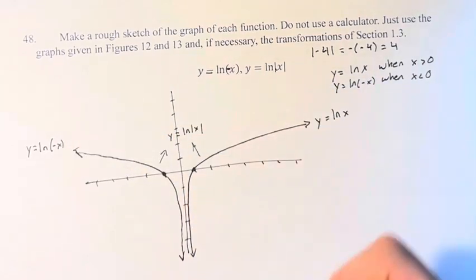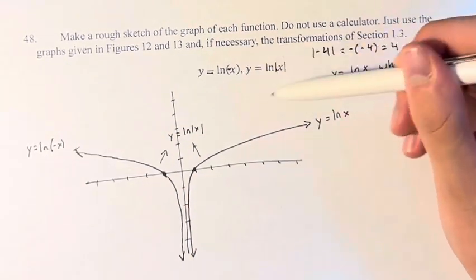So with our original graph and graphing our other function, we've actually come up with the graph of ln(|x|).